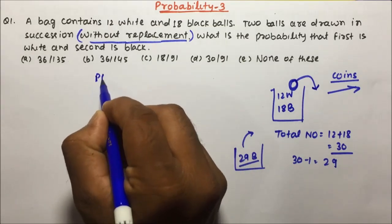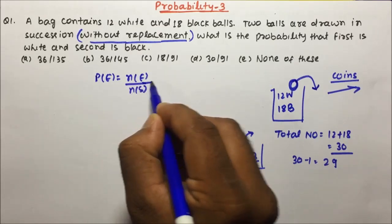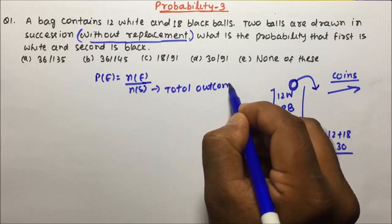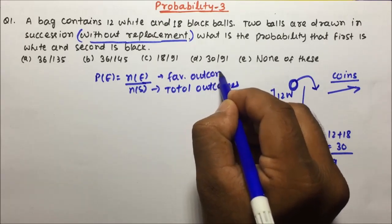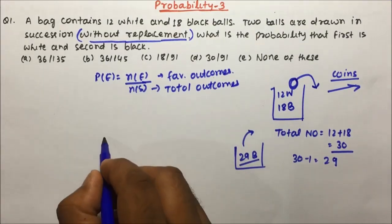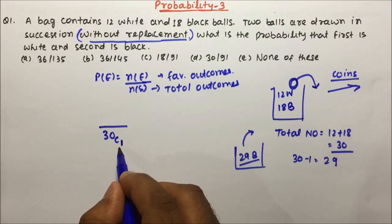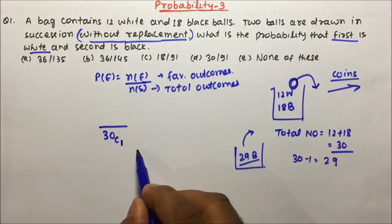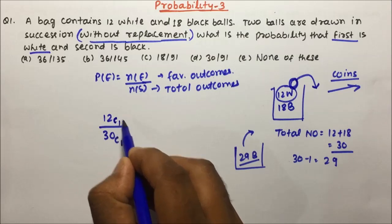The formula for probability is Ne divided by Ns, where Ns equals total outcomes and Ne equals favourable outcomes. The first ball is selected from 30 balls, so Ns for the first draw is 30C1. The first ball should be white, so the favourable outcome is to select from the white balls: 12C1.